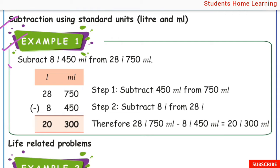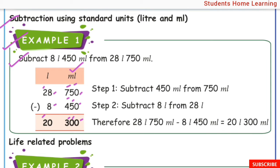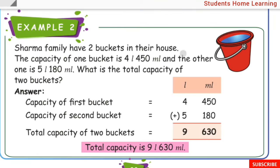Example 1: Subtract 8 liter 450 milliliter from 28 liter 750 milliliter. First, milliliter subtraction: 0 minus 0 is 0, 5 minus 5 is 0, 7 minus 4 is 3. Then liter subtraction: 8 minus 8 is 0, and 2 remains as 2. Answer: 20 liter 300 milliliter.